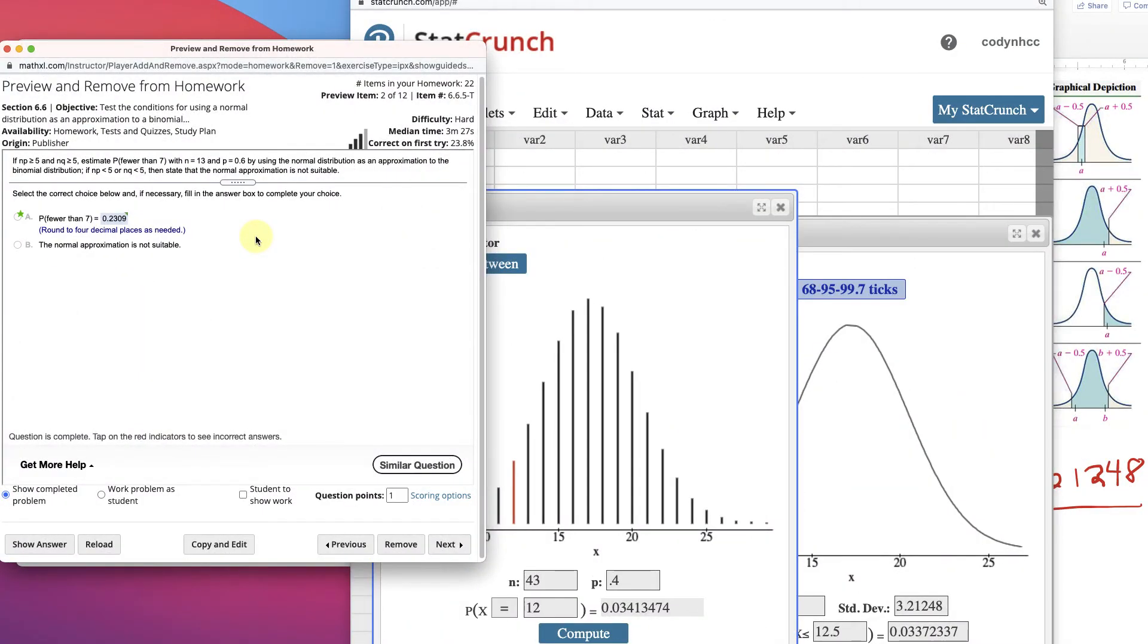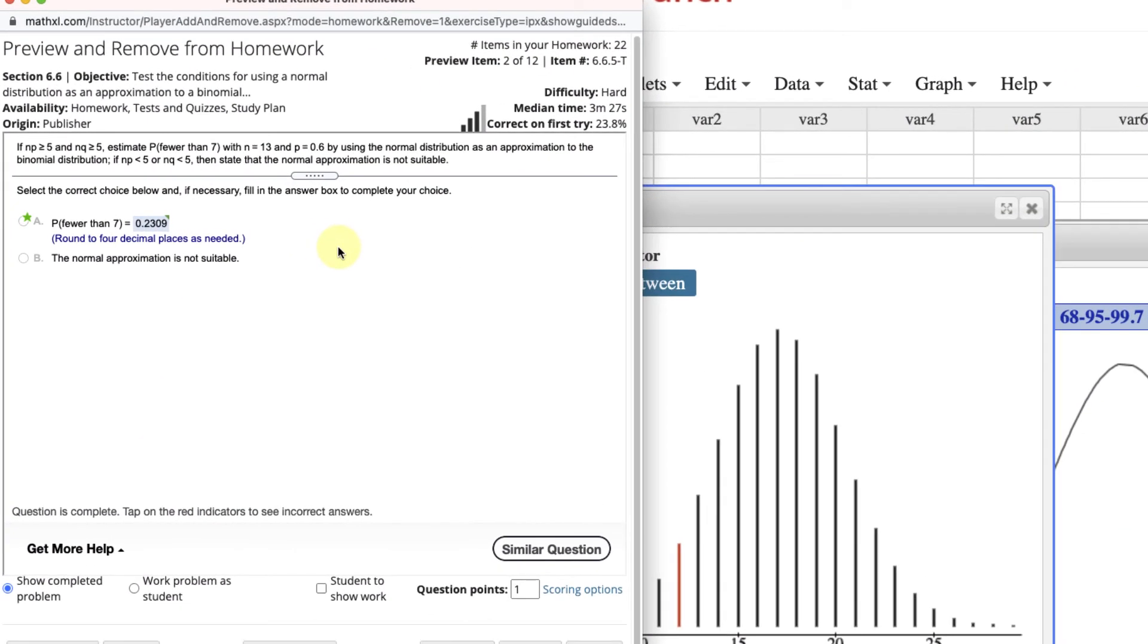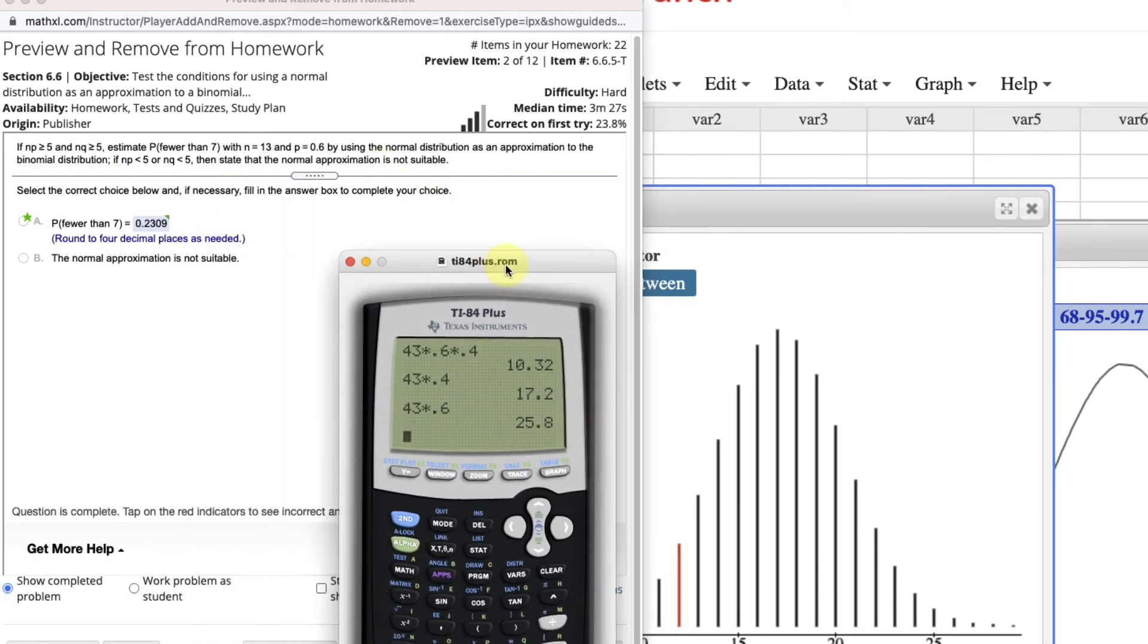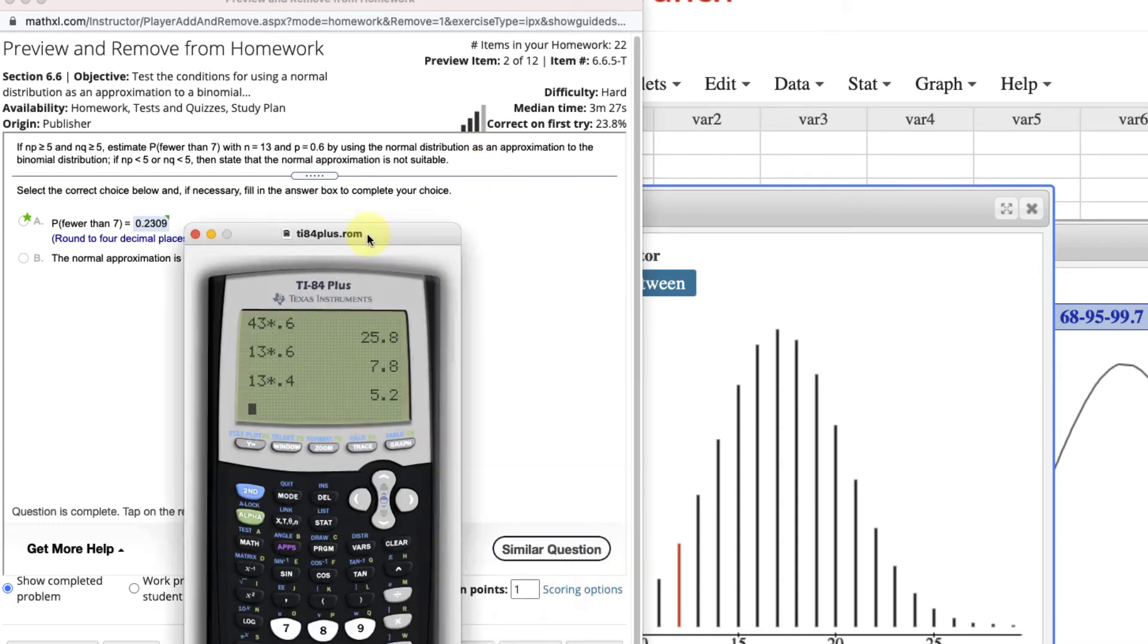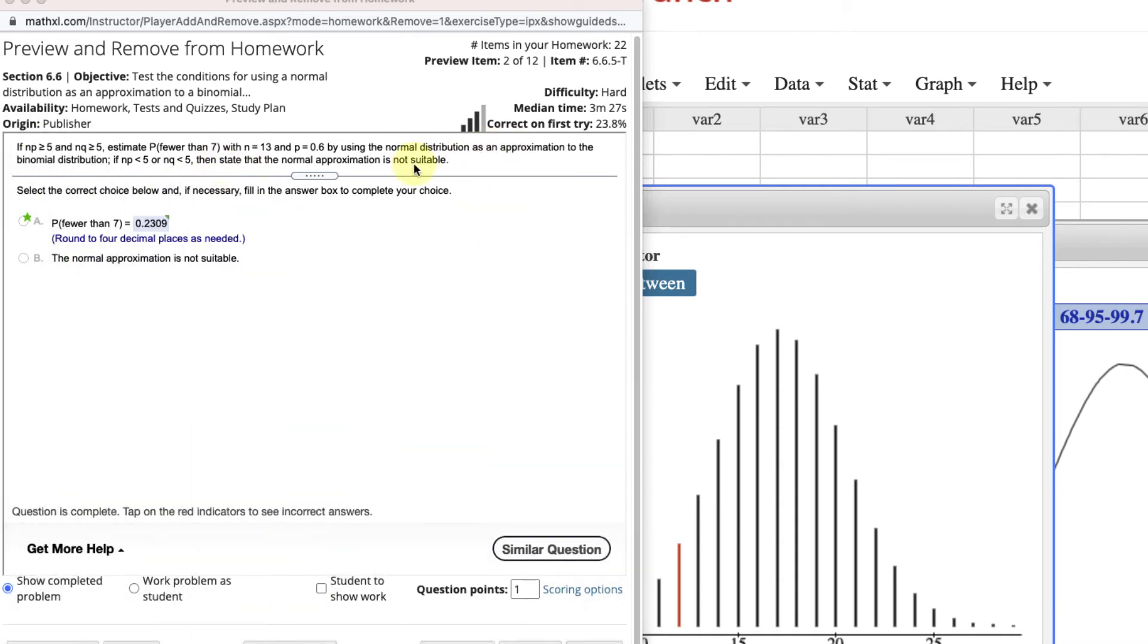Here's one from Triola. And so it's showing that if np is greater than or equal to 5, and nq is also, then we'll estimate this with these values here. So let's just quickly check that. Our n is 13. N times 0.6. Yep, greater than 5. So 13 times 0.4. Greater than 5, just barely. By using the normal distribution. If it's not, then state that you can't use it, and it's not suitable. But it is. This one says probability of fewer than 7.